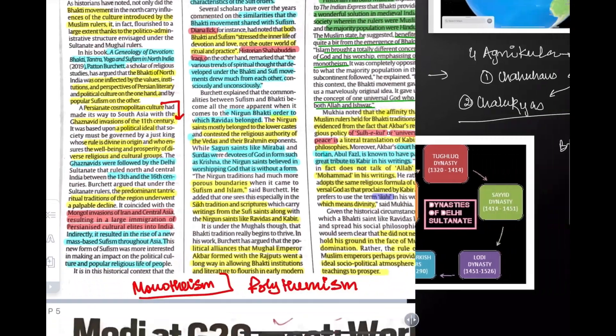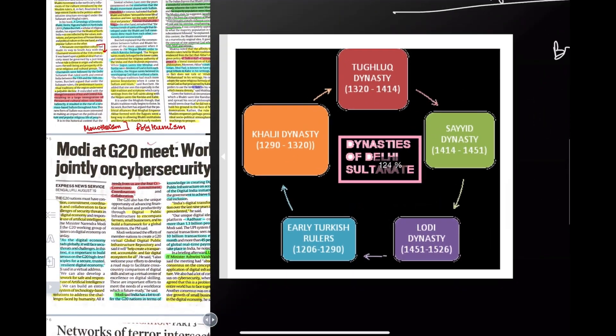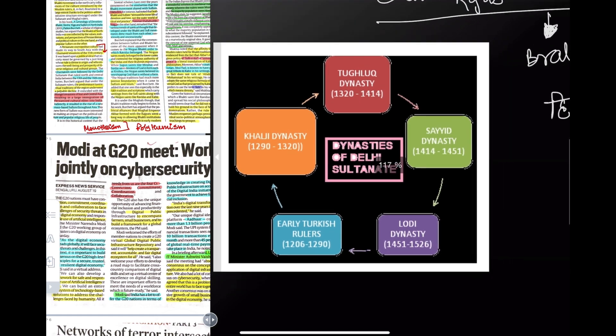Looking at the Delhi Sultanate dynasties: the earliest Turkish rule was from 1206 to 1290. Then came the Khalji Dynasty (1290–1320), followed by the Tughlaq Dynasty (1320–1414), then the Sayyid Dynasty (1414–1451), and finally the Lodi Dynasty (1451–1526).